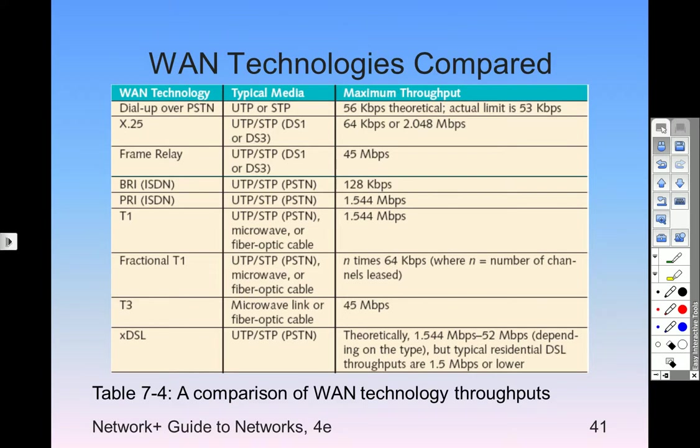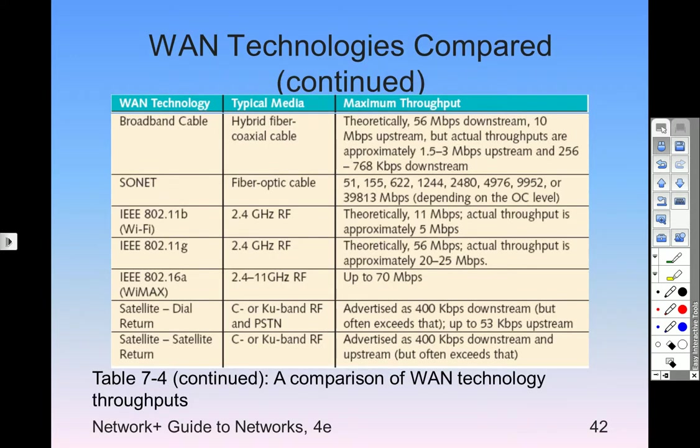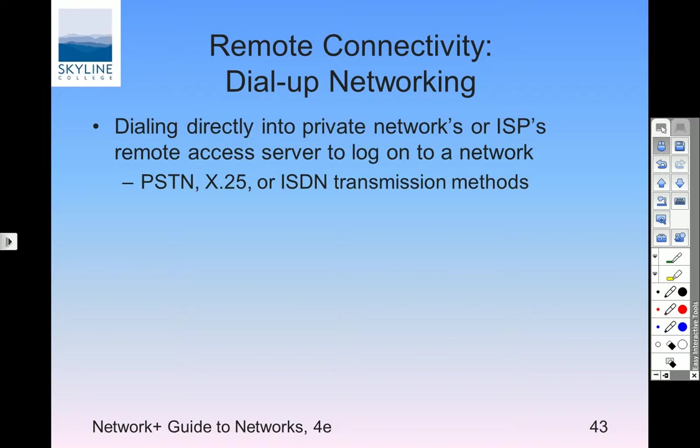This comparison chart shows the technology, the typical media, and what the maximum throughput is — not what you would necessarily expect to get. When we talked about wireless, the maximum throughput was 54 megabits per second, but you can expect to get about half of that just because of the way wireless works.